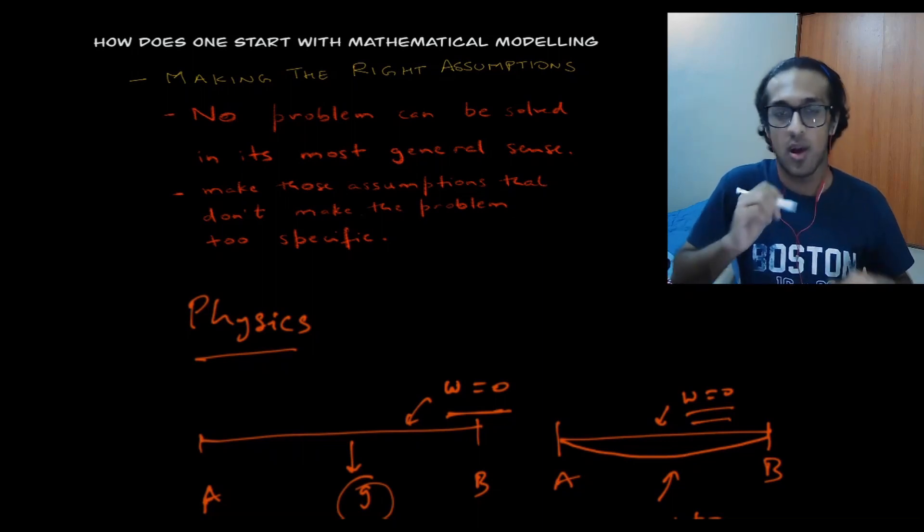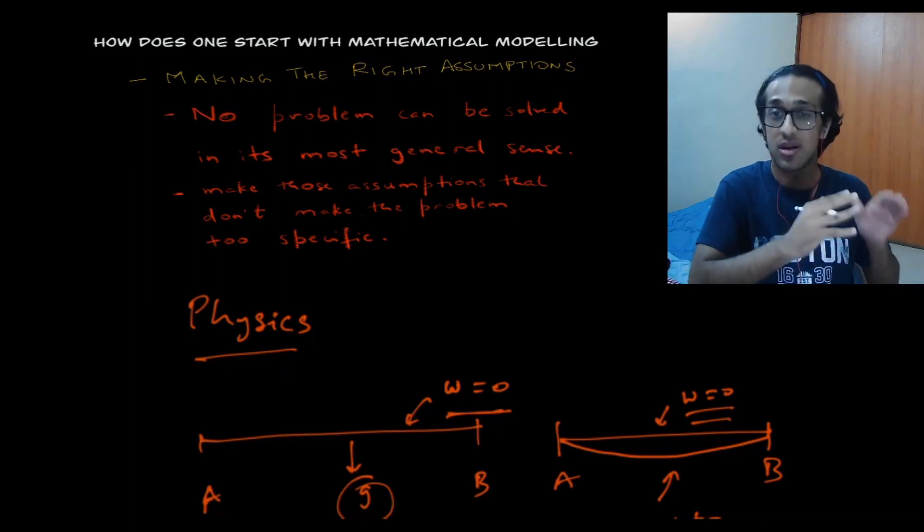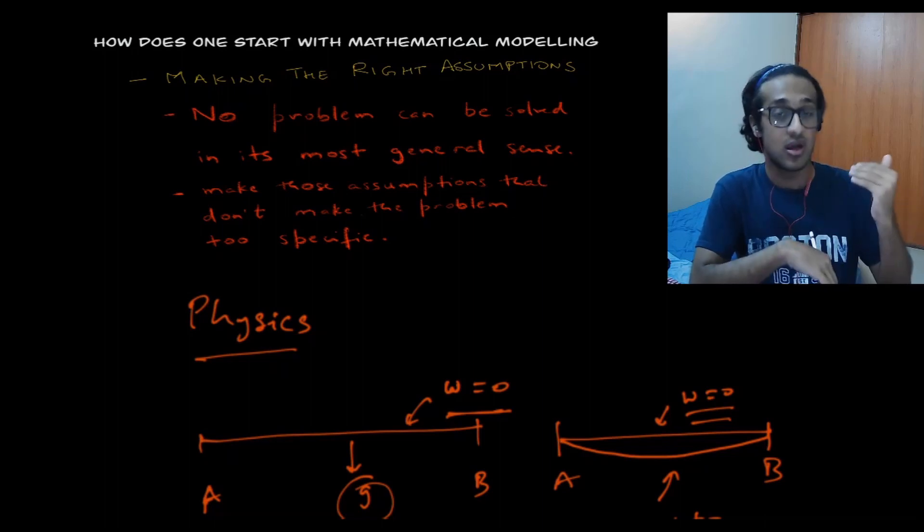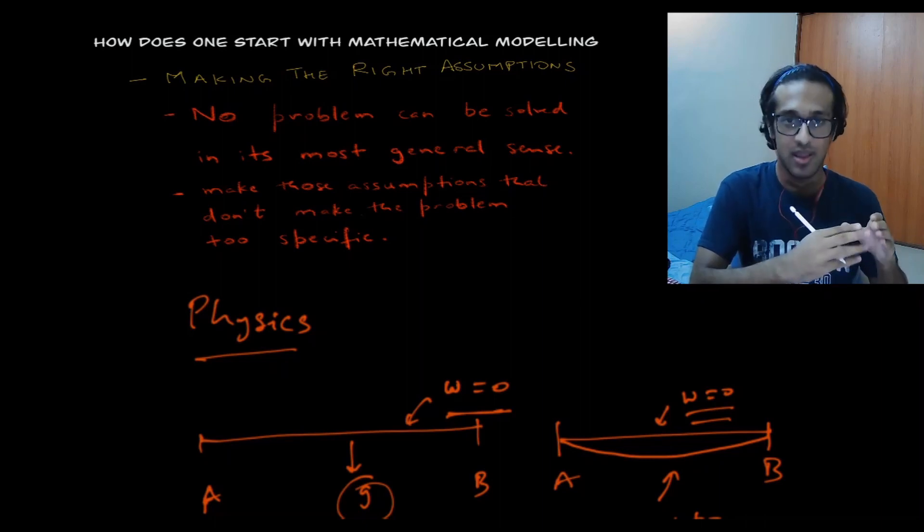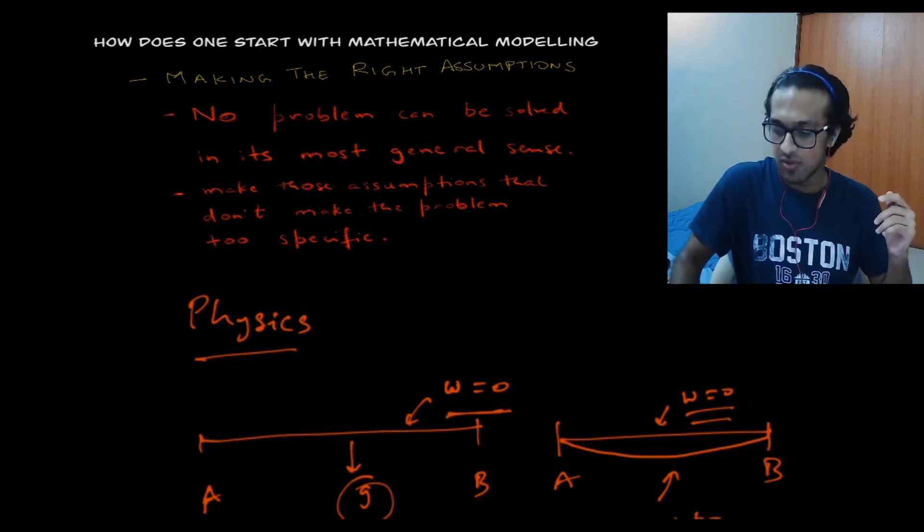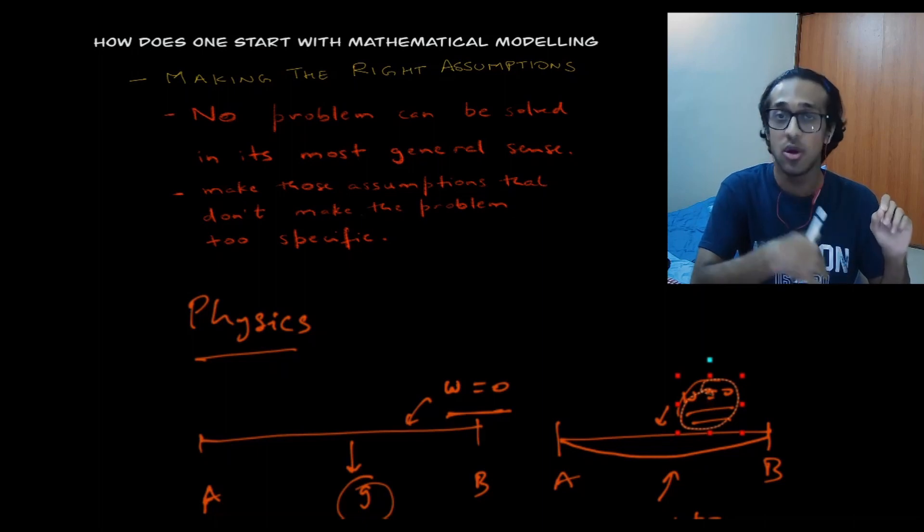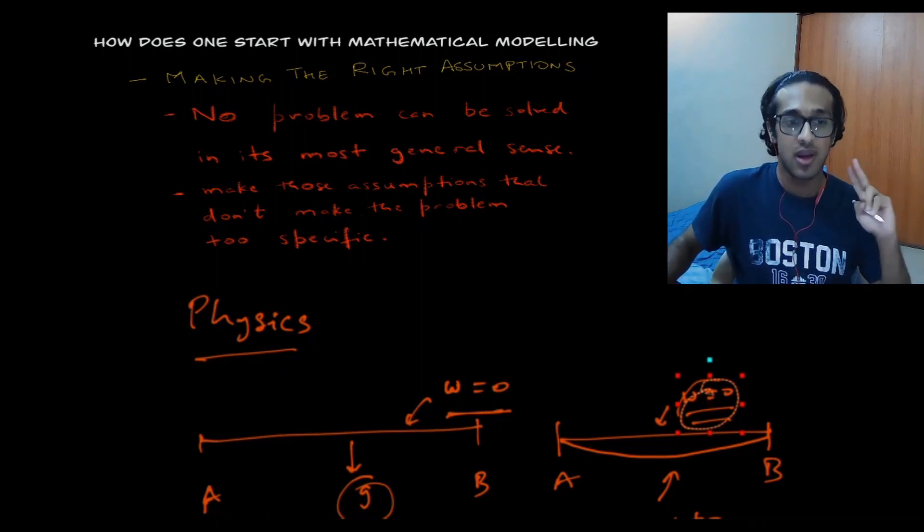So the most important thing to understand when you start with mathematical modeling is that you cannot solve a problem in its most general sense. And the thing is, the beauty in mathematical modeling is you have to make the right assumptions. So if you make too many assumptions, you end up with an extremely specific problem, and there's no point solving it. On the other hand, if you make just a few assumptions, like the one here, that weight is zero, and it helps you solve the problem. So if it helps you solve the problem with just a few small assumptions, that's a great thing, and you're good to go, and you'll get results, which are generally pretty effective for you to use. So it's very important. The second thing is to make the right assumptions.